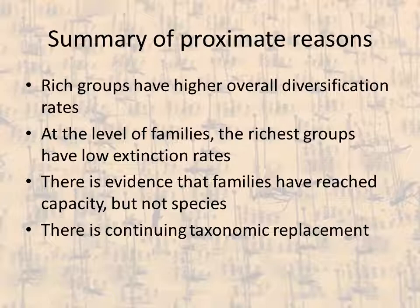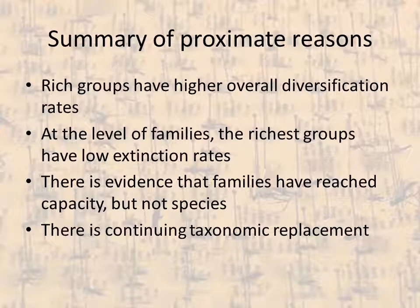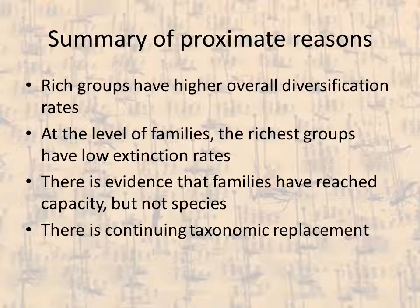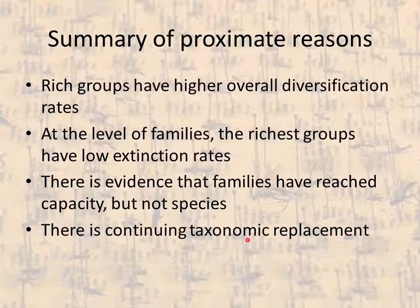Bringing together all the evidence on proximate factors affecting insect species richness: rich groups overall have higher diversification rates. When we tease out what contributes to those diversification rates in the richest groups, fossil studies show a low extinction rate characteristic of the groups with the highest number of families. But at the species level, a carrying capacity has not been met, and the future of insect life on Earth will involve more and more species evolving — though which species those are will change, with taxonomic replacement over time.